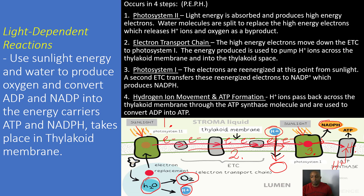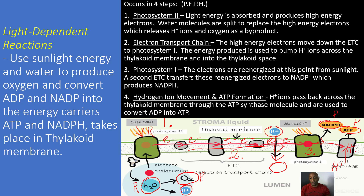Those are the four steps of the light-dependent reactions. To break it down to the basics: sunlight comes in as a reactant, water from the roots comes in as a reactant, and the three products from the light-dependent reactions are oxygen gas, NADPH, and ATP. The NADPH and ATP move into the light-independent reactions, and the oxygen gas produced is breathed in by other organisms.